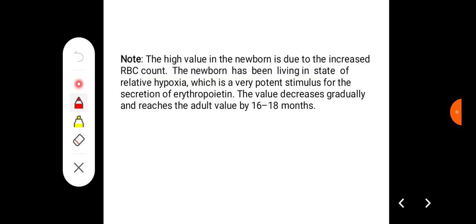Note that high value in newborn is due to increased RBC count. The newborn has been living in a state of relative hypoxia, which is a very potent stimulus for the secretion of erythropoietin. The value decreases gradually and reaches the adult value by 16 to 18 months.